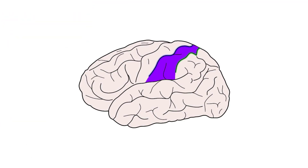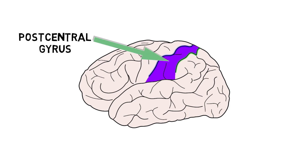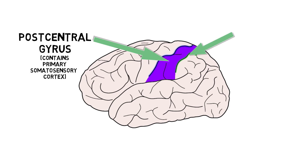Just posterior to the central sulcus is the postcentral gyrus. The postcentral gyrus is the location of the primary somatosensory cortex, an area involved with processing bodily sensations like touch and pain. The neurons in the primary somatosensory cortex are arranged in a somatotopic map, meaning that different regions of the cortex receive sensory input from specific parts of the body. The postcentral gyrus extends to the postcentral sulcus.